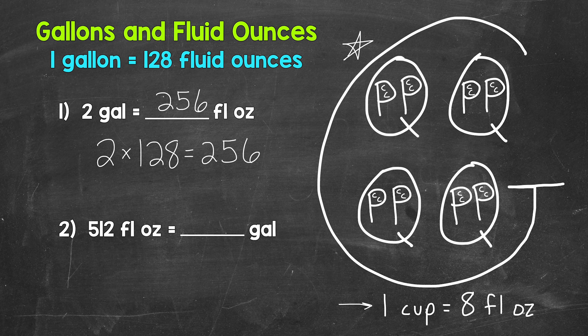Let's move on to number two, where we have 512 fluid ounces equals how many gallons. So we are converting fluid ounces to gallons. Well, each group of 128 fluid ounces equals a gallon. So how many groups of 128 fluid ounces in 512 fluid ounces? So we need to divide here. We are dividing by 128, so 512 divided by 128. So when we go from fluid ounces to gallons, we divide by 128.